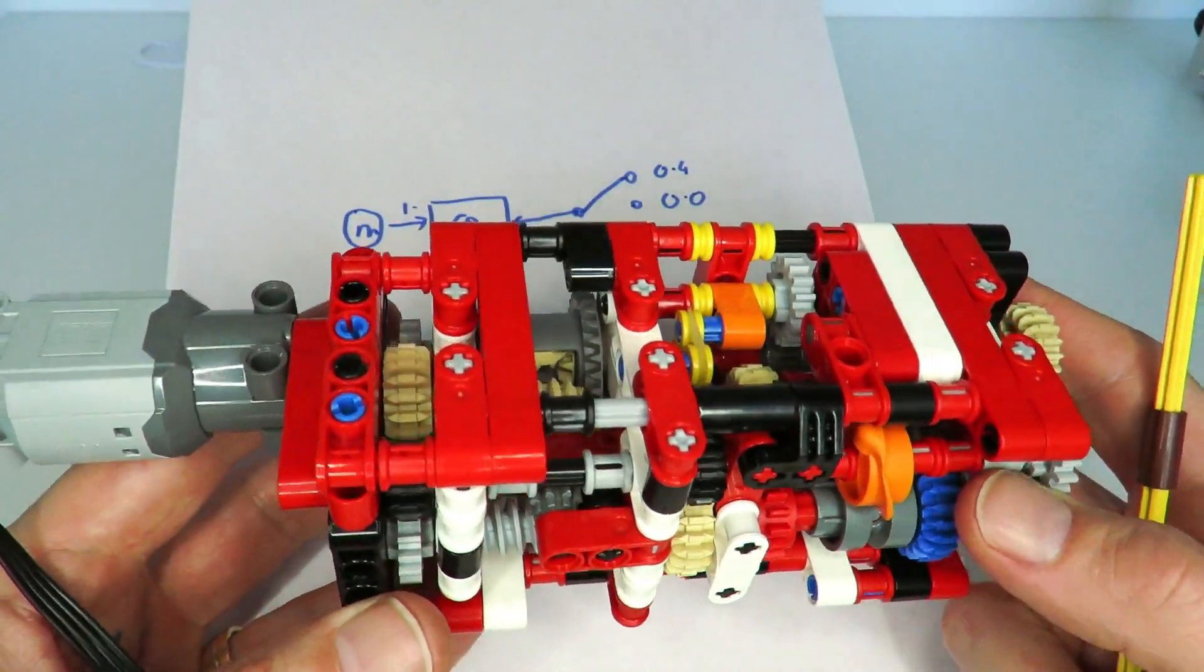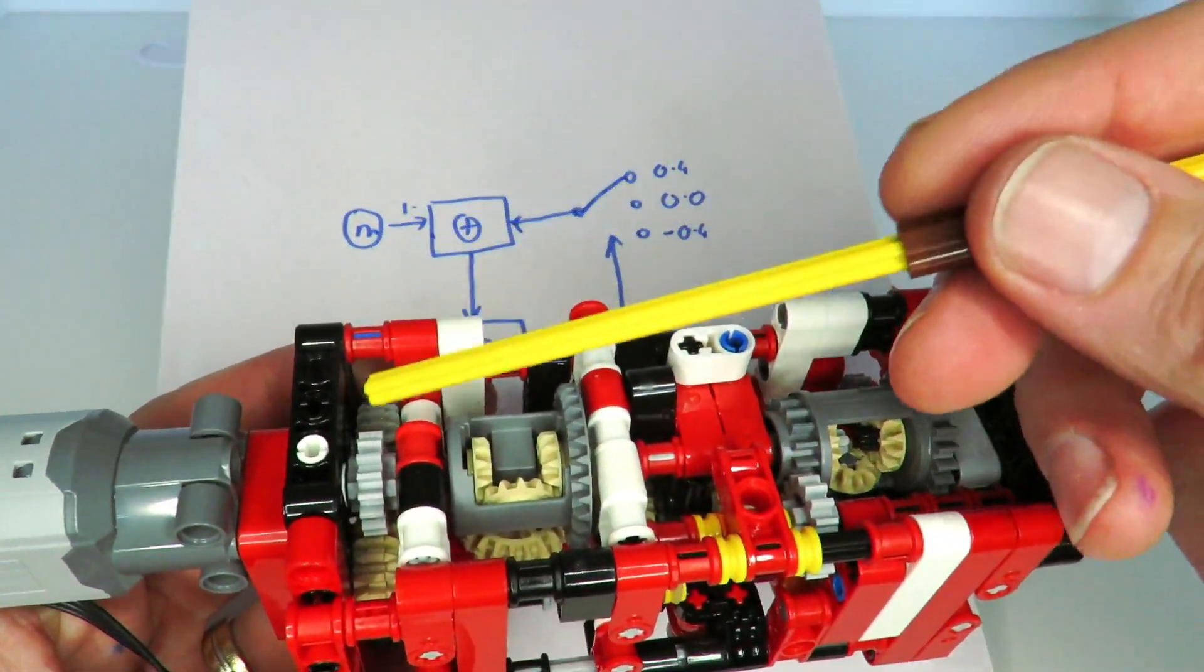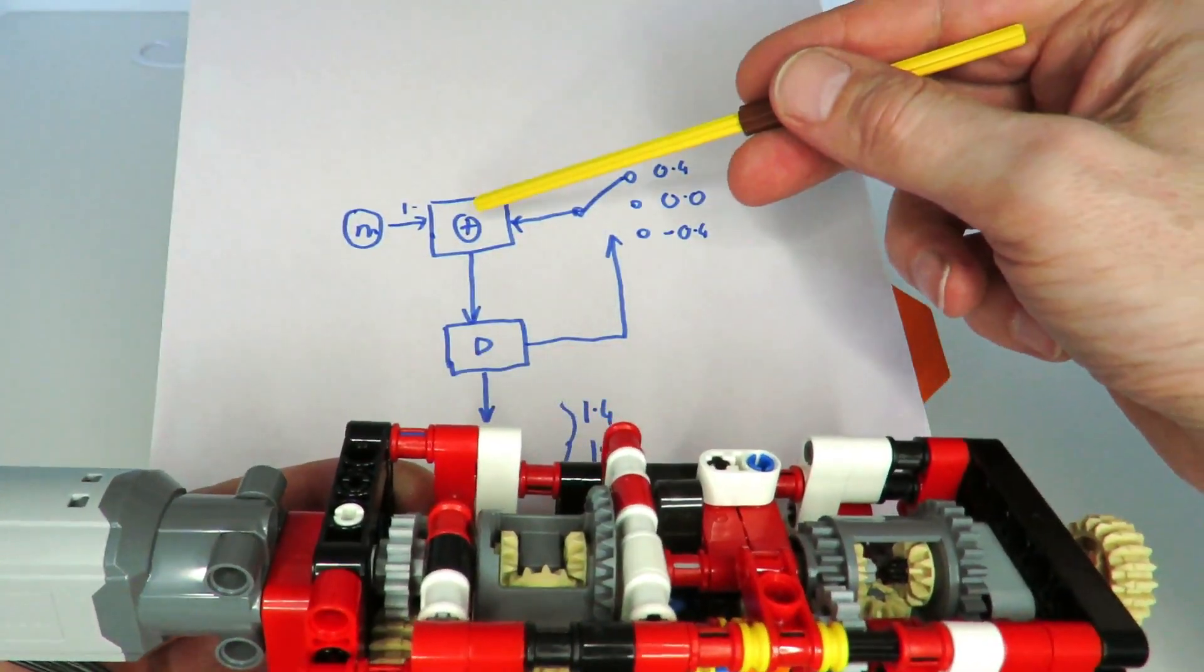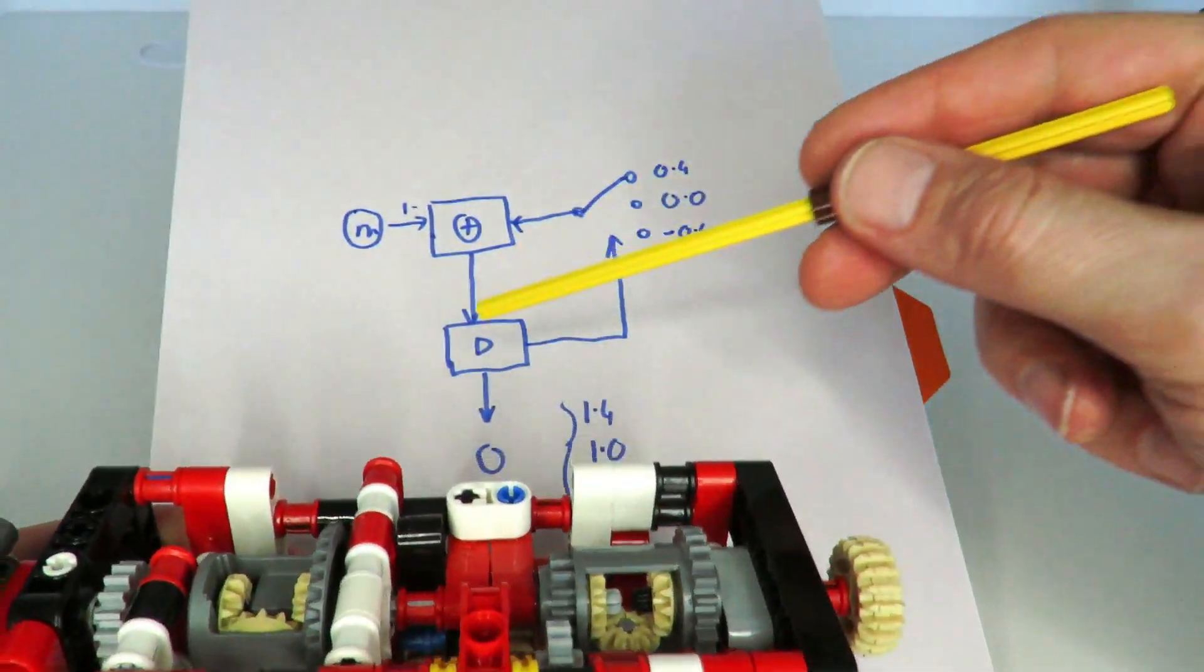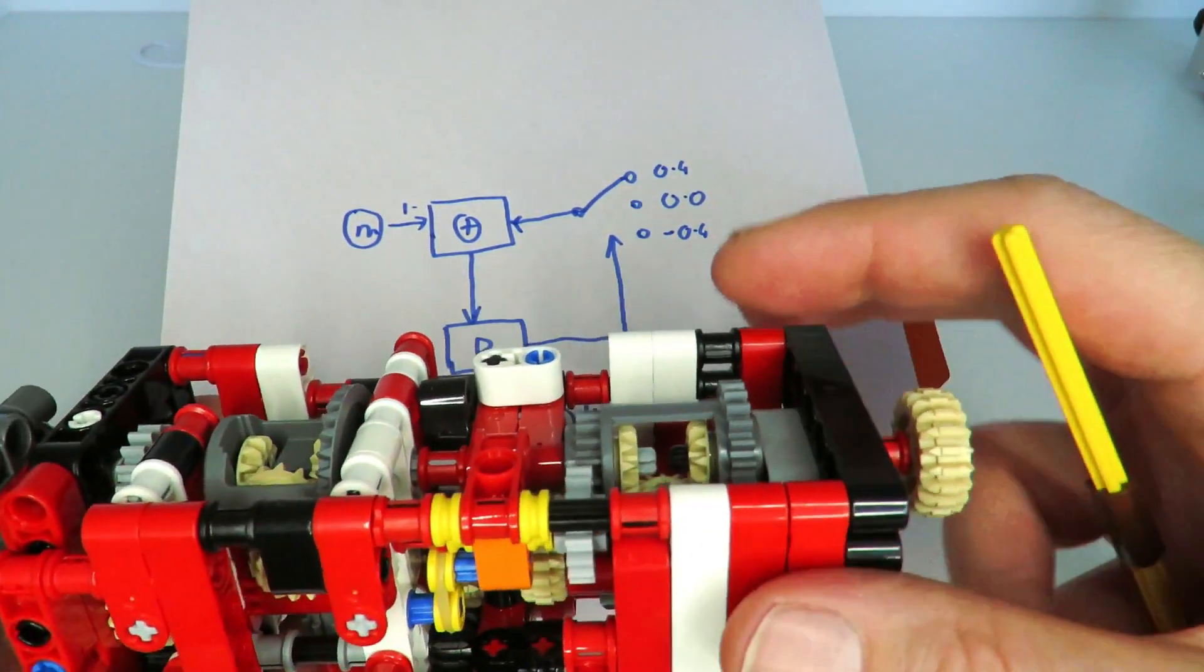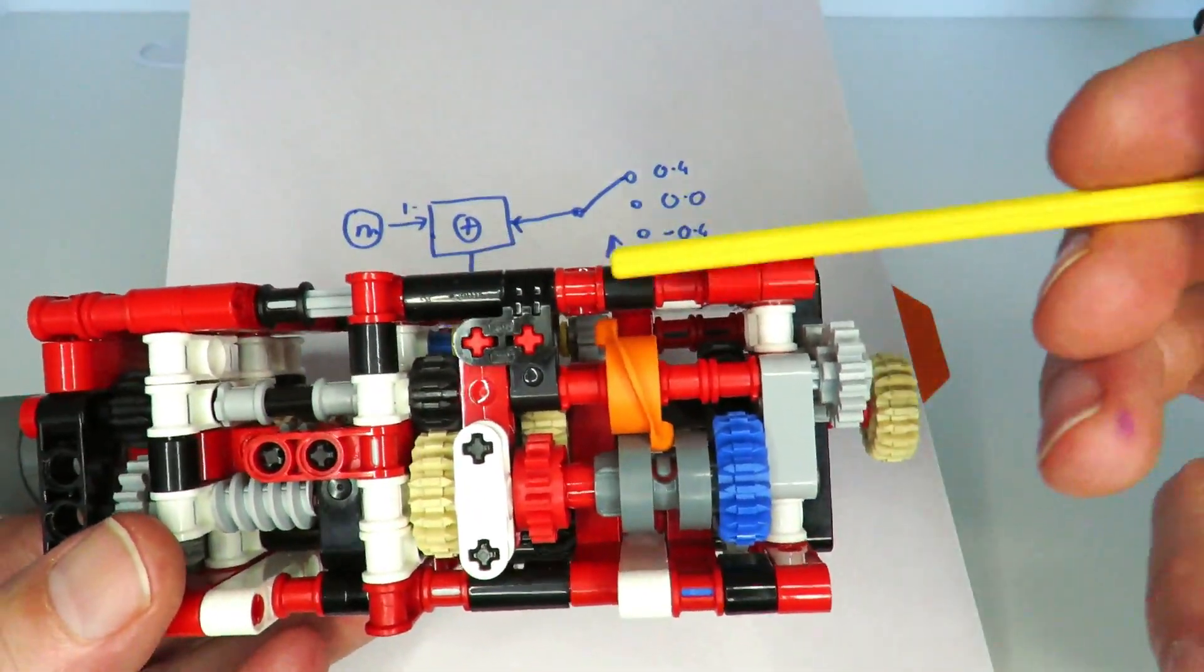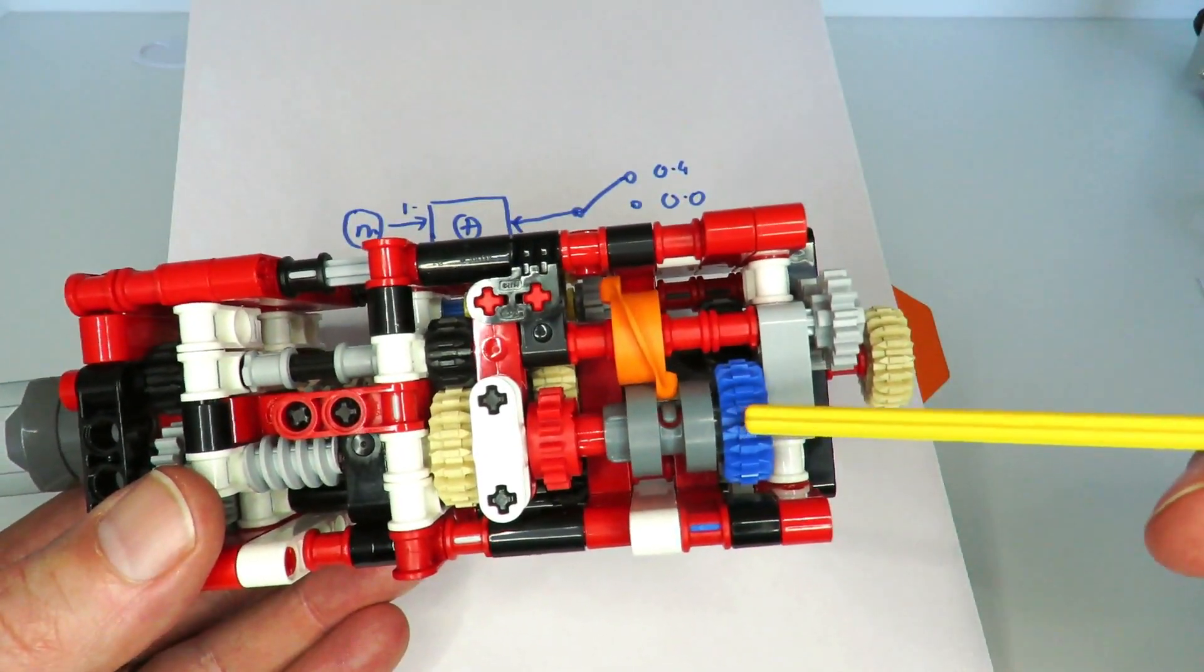So I'll just show you how the design relates to the actual implementation. So over here we've got a motor on the left. The motor then drives through that summing differential that we talked about on the diagram over here. That then passes through into the torque detection differential onto the output.